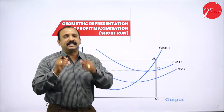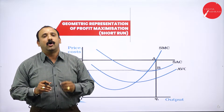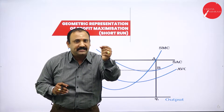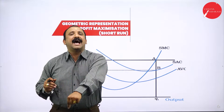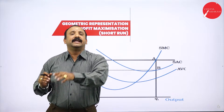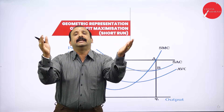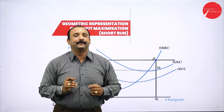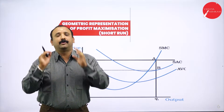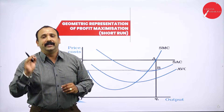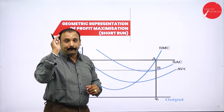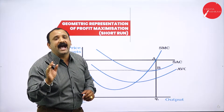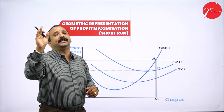We discussed this in the previous session as well — if the price comes down below the average variable cost, it automatically leads to a shutdown point. So at any given point of time, we need to keep in mind that the price of the product should be above the average variable cost.